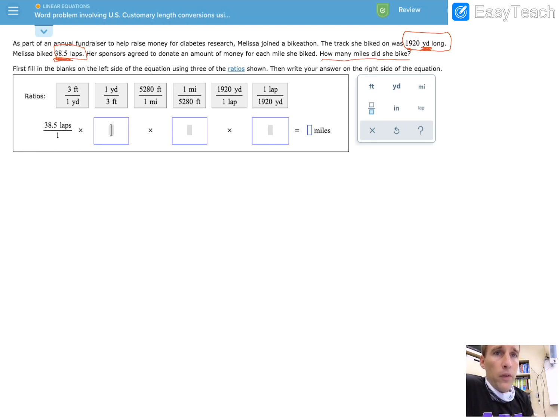They want us to take all these ratios that we see right here, all of those, and put them into a box down here. Alright, so how do we do that?